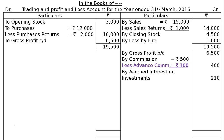By Accrued Interest on Investments: Rs. 210. This is interest that is due but not yet received — it is a current asset and will be shown under Current Assets in the Balance Sheet. Next is Due from Insurance Company: the insurance company admitted the claim for Rs. 1,000 but has not yet paid. Hence it is receivable income, shown on the P&L credit side and also as a current asset in the Balance Sheet.